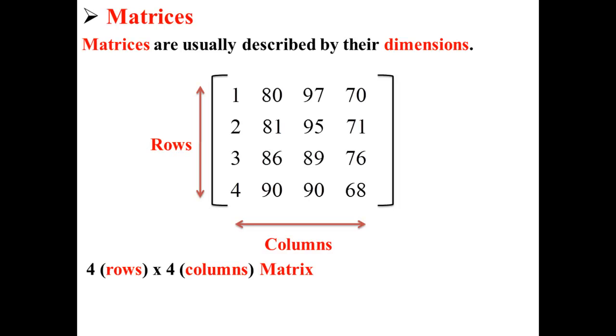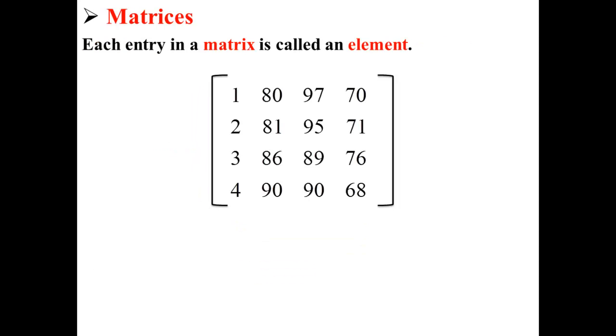Each entry in a matrix is called an element. For example, 80 is one element in our four by four matrix.